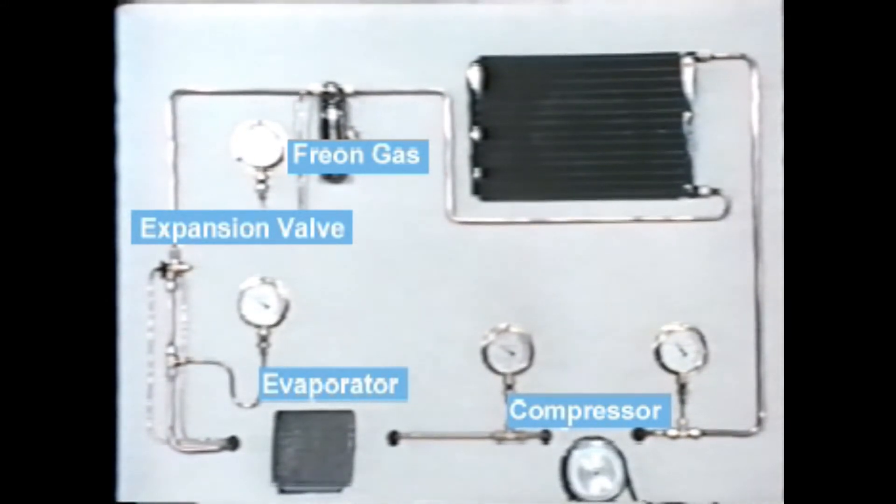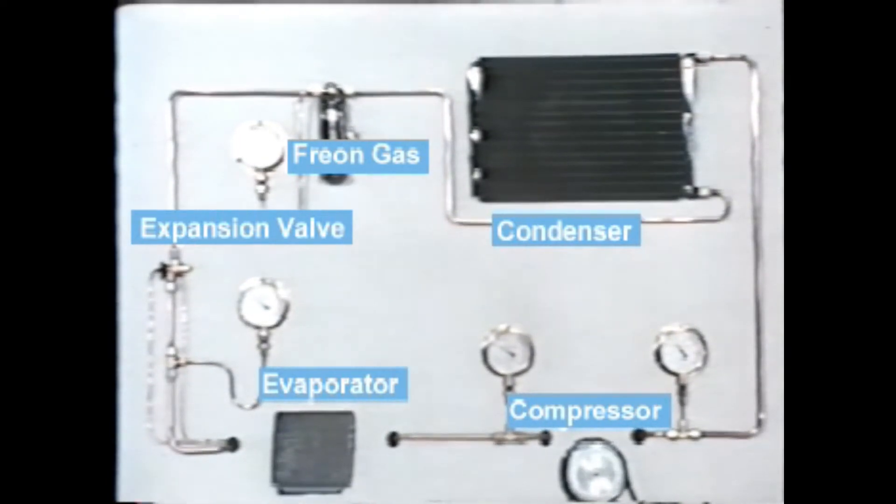It has been transmitted to the condenser which releases its heat around it and again is liquefied. In this way the freon repeats refrigerating cycles from the expansion valve to the evaporator.